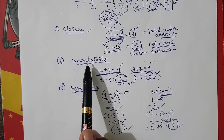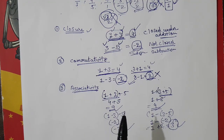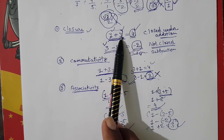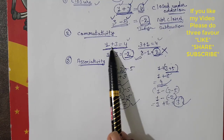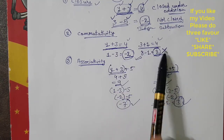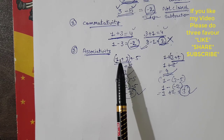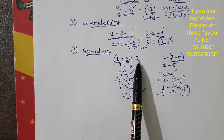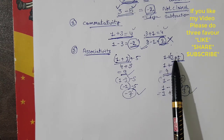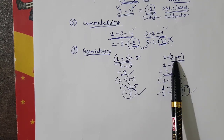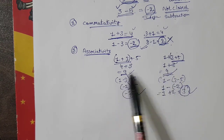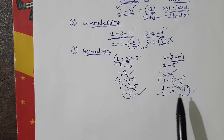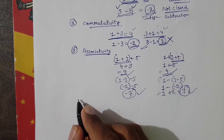To summarize the three properties: for closure property, perform the operation and check if the answer is in the same category of numbers. For commutative property, reverse the numbers and check if you get the same answer. For associative property, first add the first and second terms then add the third, then compare with adding the second and third first then adding the first — if same they are closed, if different they are not.